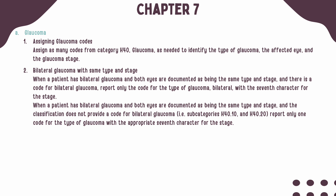When a patient has bilateral glaucoma and both eyes are documented within the same type and same stage, a bilateral code should be assigned, if it's available, with the seventh character to represent the most appropriate stage.